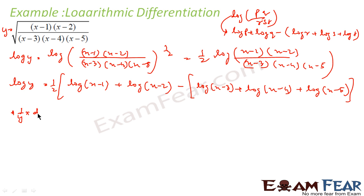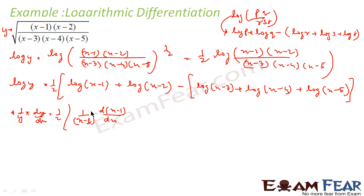So this becomes 1 by y times dy by dx equals 1 by 2 times: derivative of log(x minus 1) is 1 by (x minus 1) times d(x minus 1) by dx — that is 1 only. Because I assume this as t, so dy by dt is 1 by t, into dt by dx. Then plus 1 by (x minus 2) times d(x minus 2) by dx.